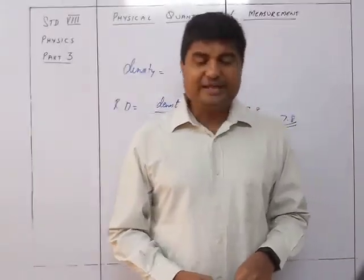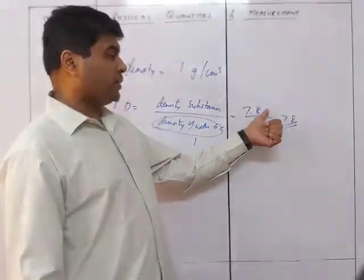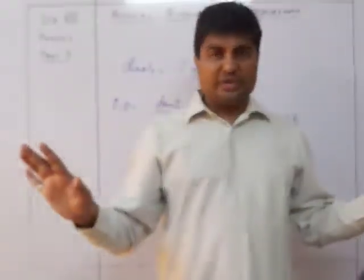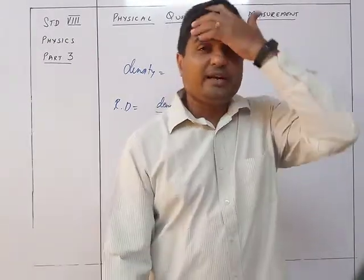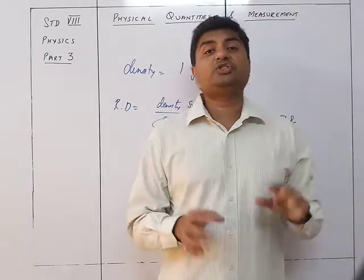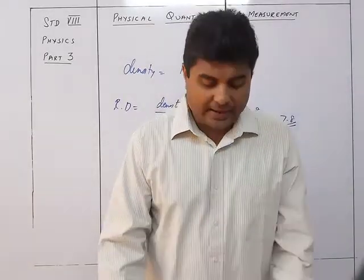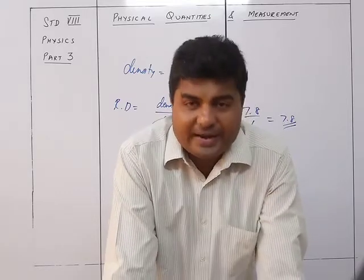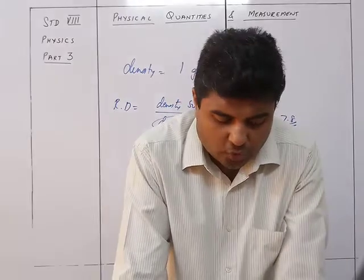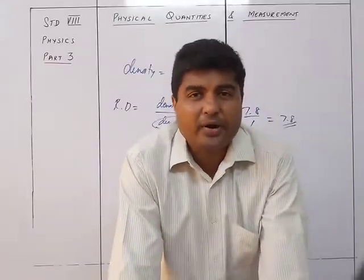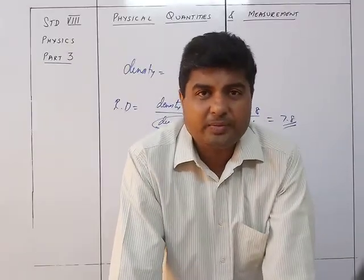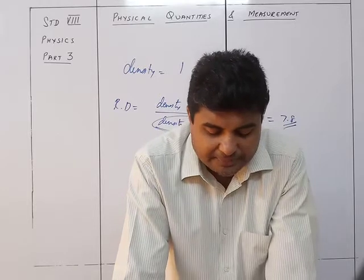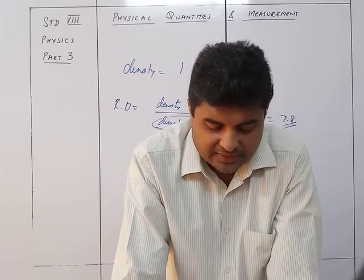Since relative density is a ratio, the units cancel out — hence relative density has no units. Relative density is a ratio of two similar quantities, that's why the units cancel out. For example, density of iron is 7.8 gram per centimeter cube upon density of water 1 gram per centimeter cube, giving 7.8.